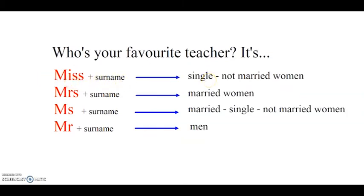Utilizziamo Miss, corrisponde al nostro signorina, per le donne single o comunque non sposate. We use Mrs plus surname for married women. Per le donne sposate utilizziamo Mrs e il cognome, corrisponde al nostro signora.